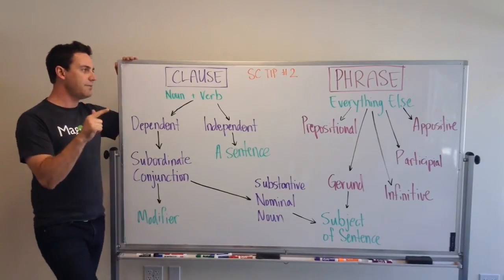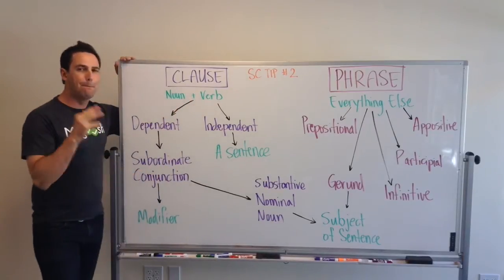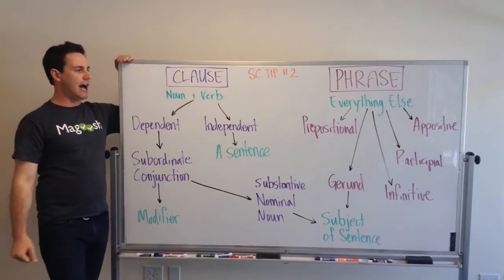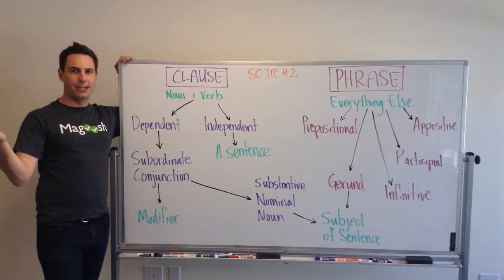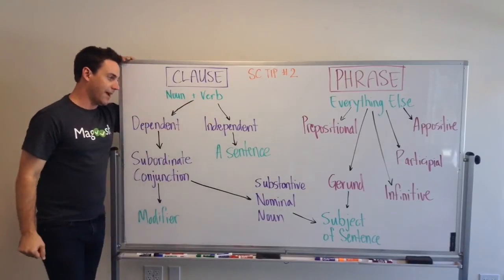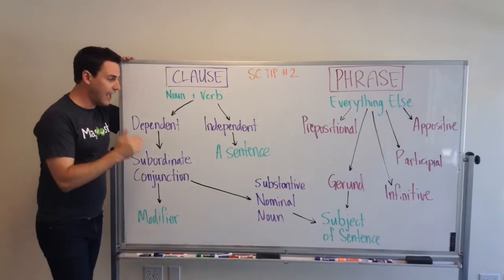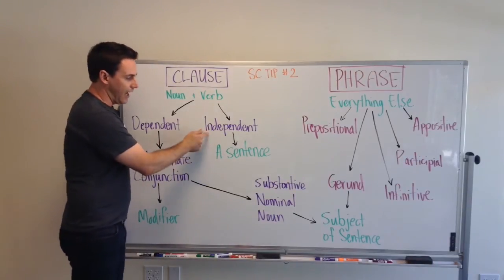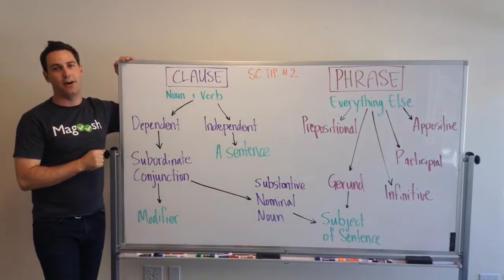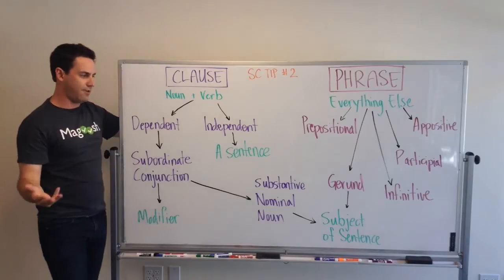A clause fundamentally is a noun and a verb. At its most basic form, it can be just two words, like 'I read' — and then I can throw Shakespeare in there as the object. 'I read' is my noun and my verb. A clause is an independent clause when it is just a noun and a verb, giving you sentences like 'I read,' 'I ran,' or 'I sleep.'